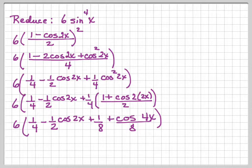Once again, separating out my last fraction, 1 fourth times 1 is 1 eighth, and 1 fourth times cosine 2 times 2x over 2 is cosine 4x over 8.